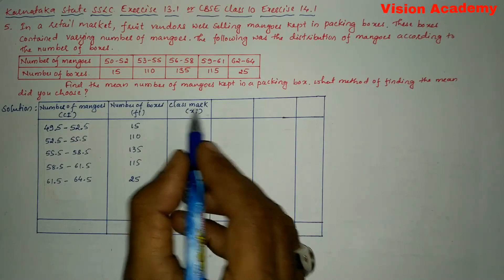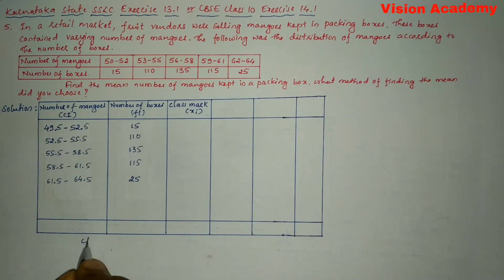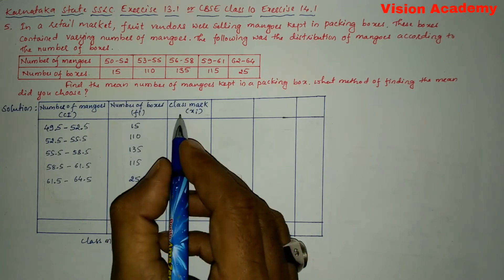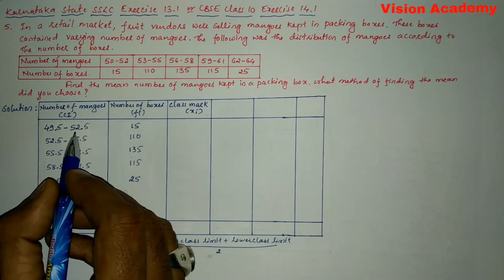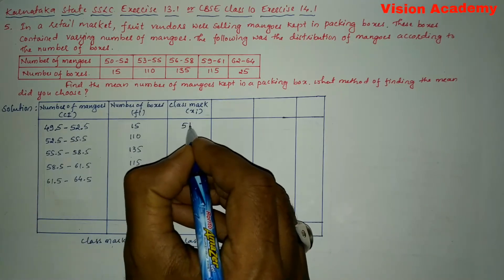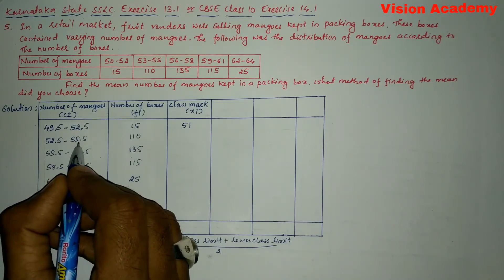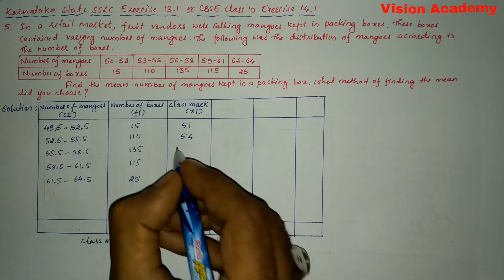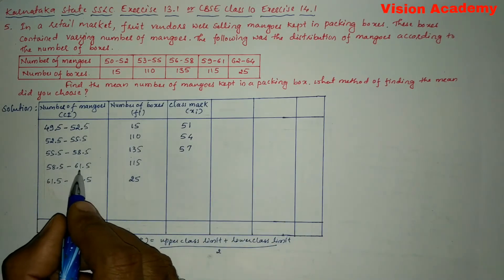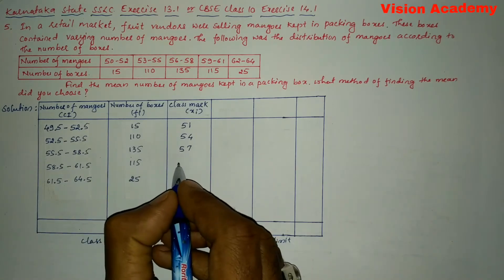Now let us take class mark. So already we know that class mark can be written as, we will write class mark is denoted as xi is equal to upper class limit plus lower class limit whole divided by 2, gives us the class mark. So that is midpoint of this class interval. So here 49.5 plus 52.5 divided by 2 this gives us 51. Next 52.5 plus 55.5 divided by 2 gives us 54. Next 55.5 plus 58.5 divided by 2 gives us 57. Next 58.5 plus 61.5 divided by 2 gives us 60.